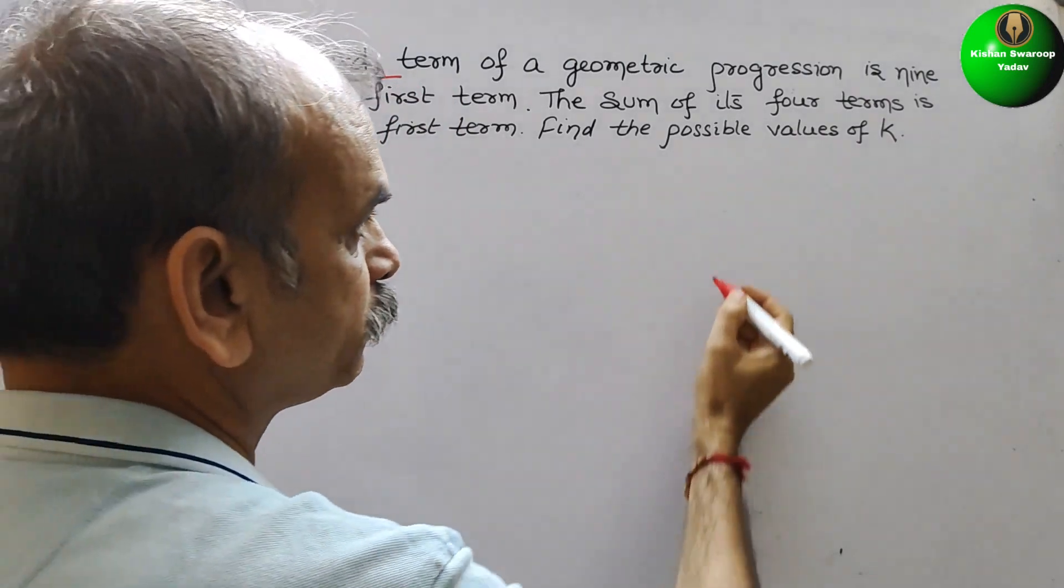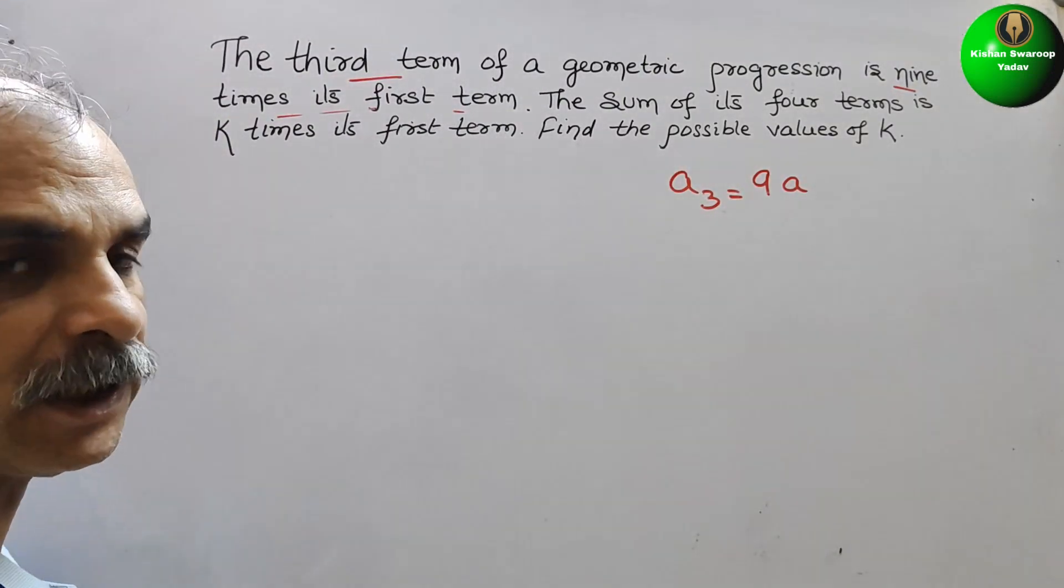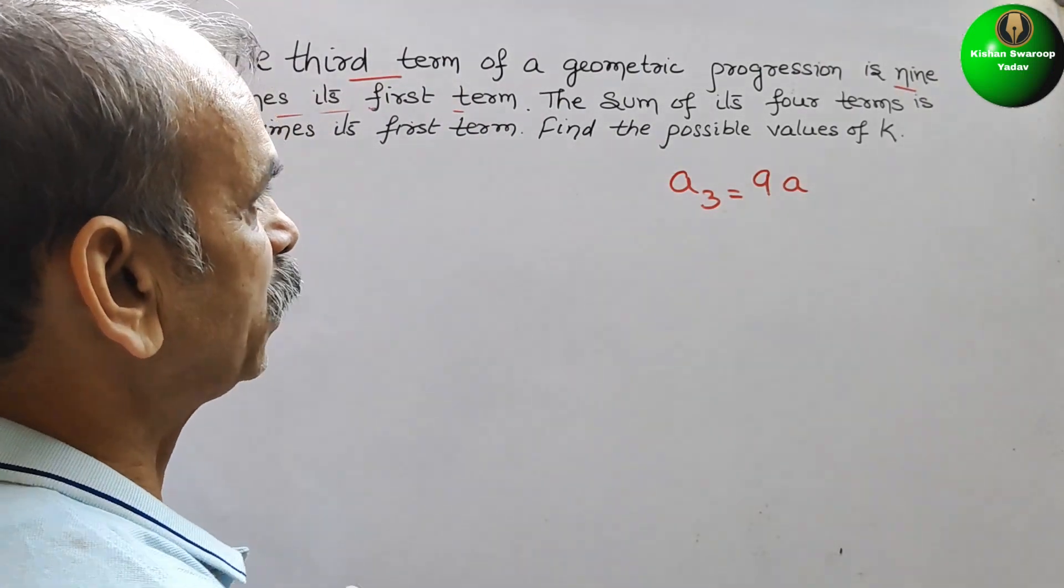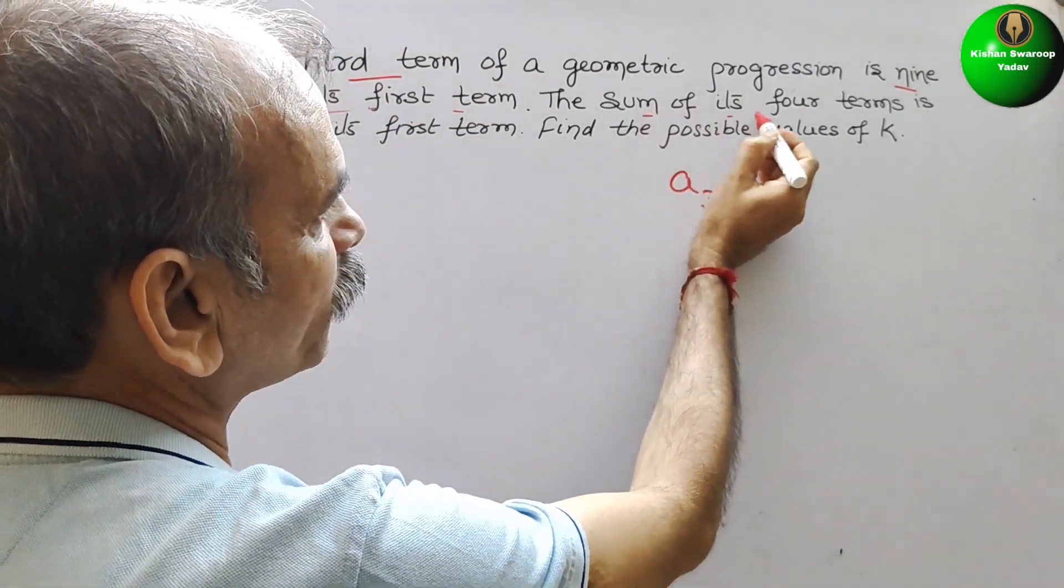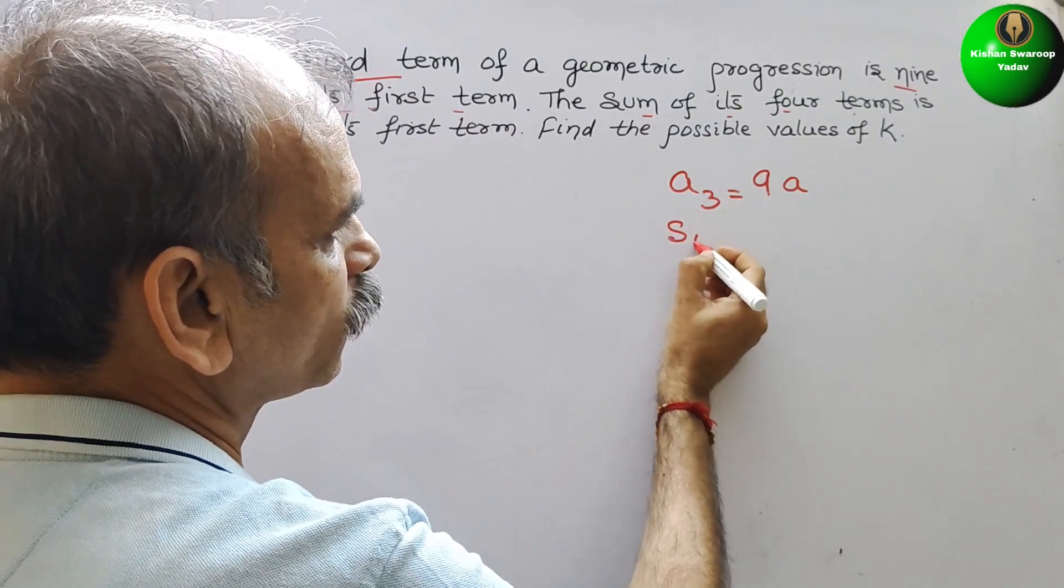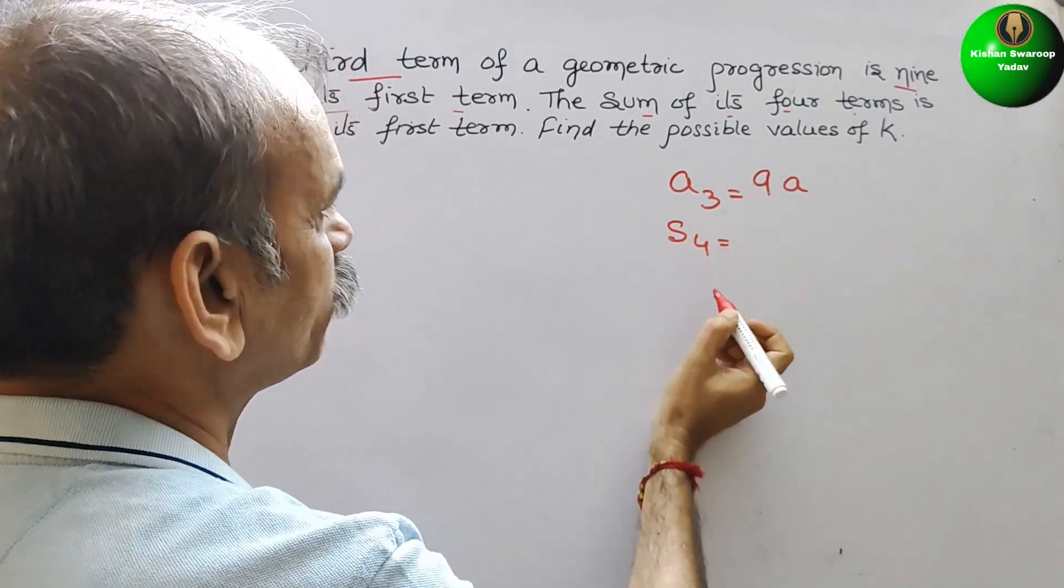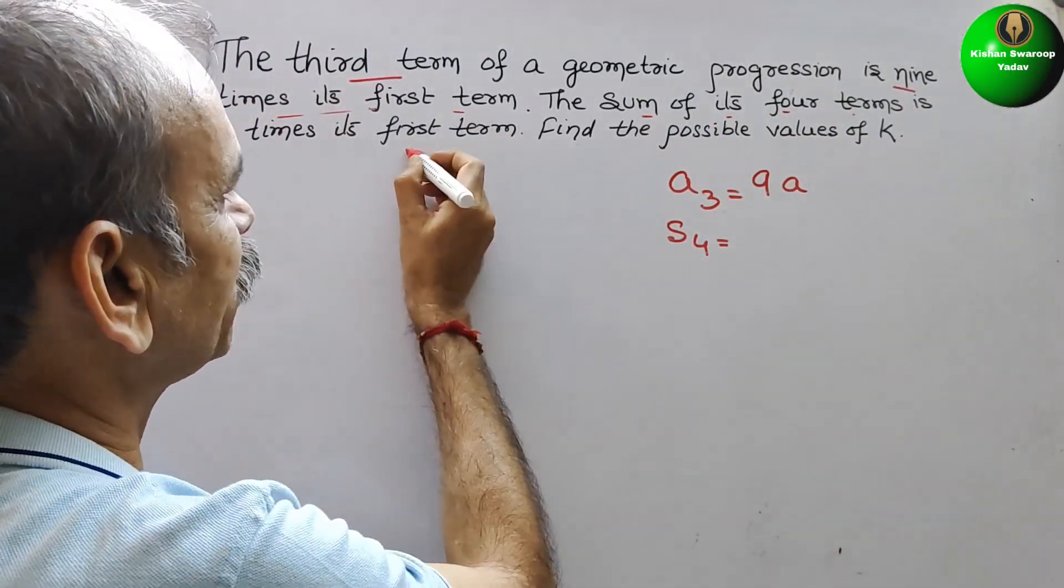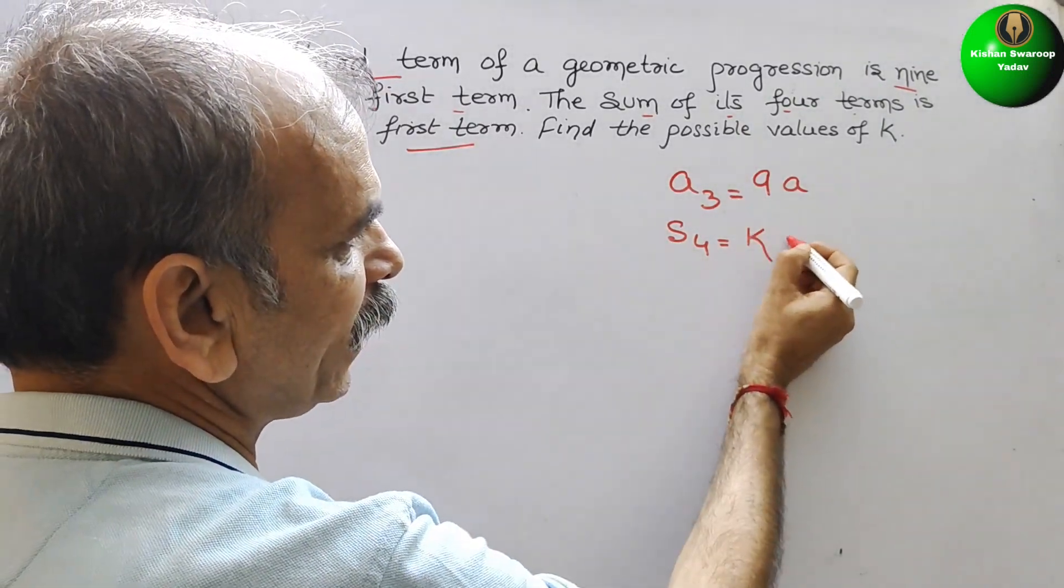Now you can see what they have told. They have told the third term, that means a₃, that is equal to nine times its first term, 9a. This equation they have given first. Second, what they have told: the sum of its fourth term, that means s₄, that is equal to k times its first term. So we can say ka.